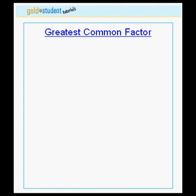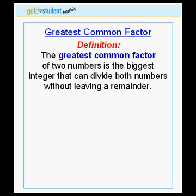This is the third tutorial on how to calculate the greatest common factor of two numbers. First, a review. The definition: the greatest common factor of two numbers is the biggest integer that can divide both numbers without leaving a remainder.